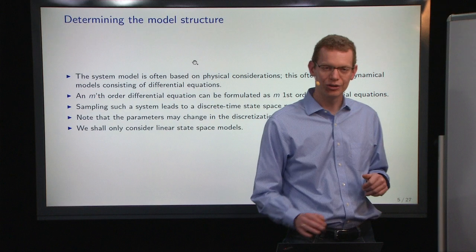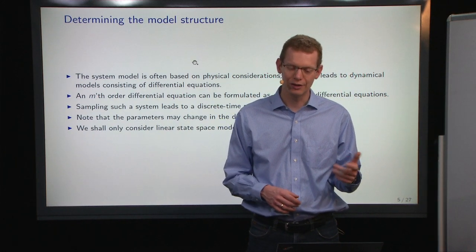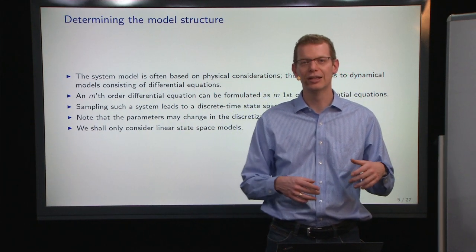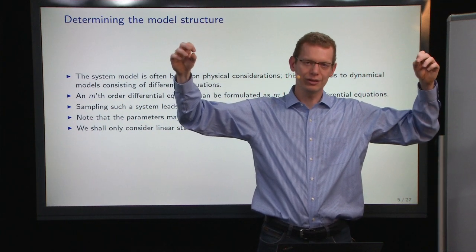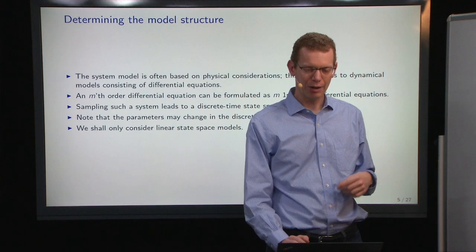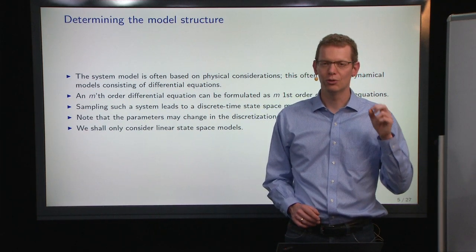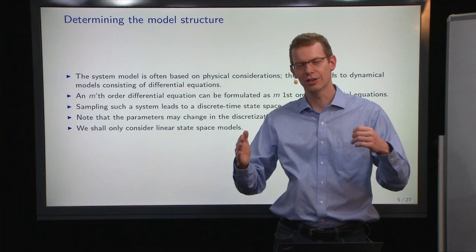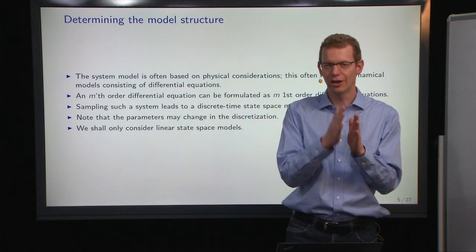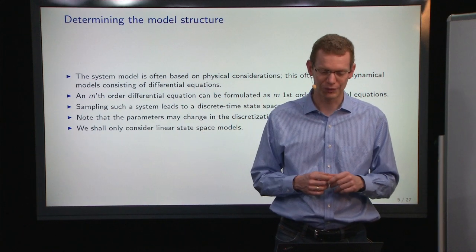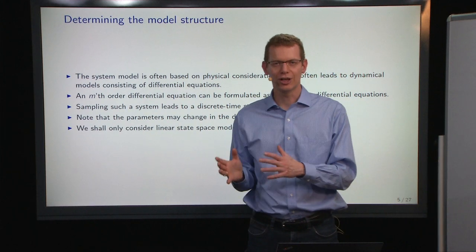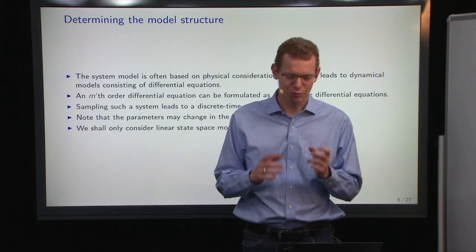A general thing is that you can take any m-th order differential equation and then you can formulate that as m first order differential equations. The typical thing is that you take an acceleration model for the second order derivative, and then you write that as two coupled first order differential equations. Whenever you do observe a system, it's almost always in discrete time. If it's equidistant, then we're in the scope of this, but we can also handle non-equidistant samplings. But you should also keep in mind that when you do this change from continuous time to discrete time, you may also change the parameterization in the model.